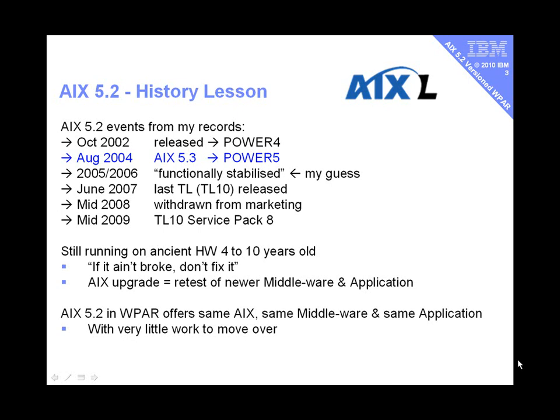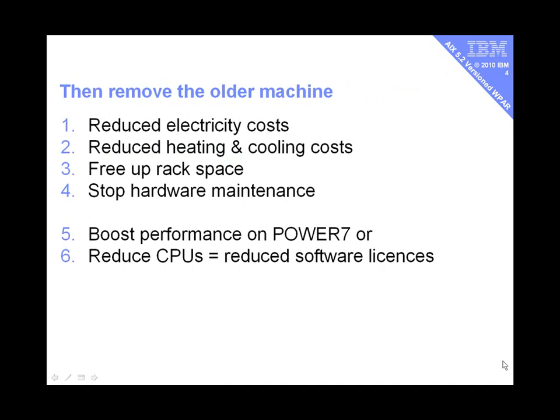So what this product offers is that you can run the same copy of AIX, the same middleware, and the same application versions, but in a new environment on AIX 7 running on top of a Power 7 machine. Once you've moved your applications off these older machines, you can simply remove them from your data center — saving costs for electricity, heating, cooling, floor space or rack space, and hardware maintenance. And frankly, if you've been running these machines for eight or nine years, it's going to be difficult to get spare parts.